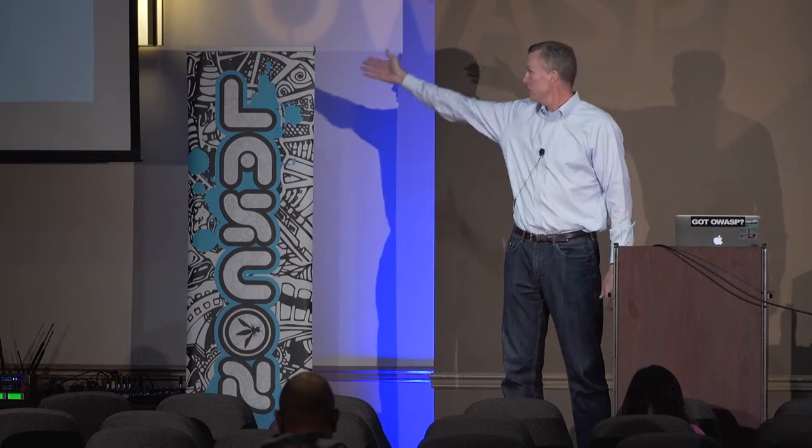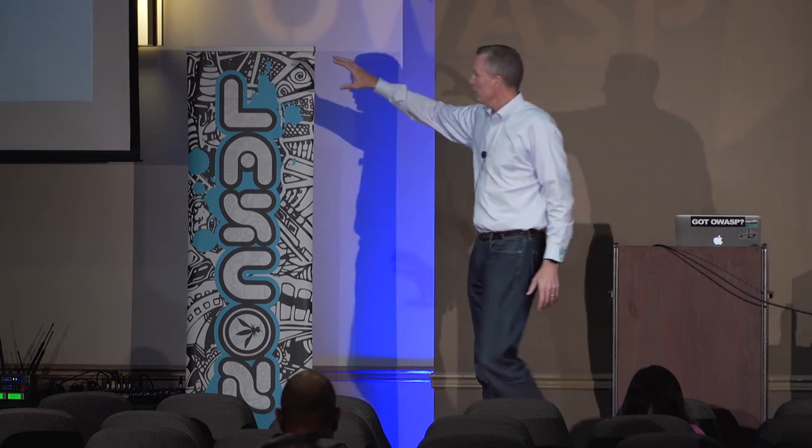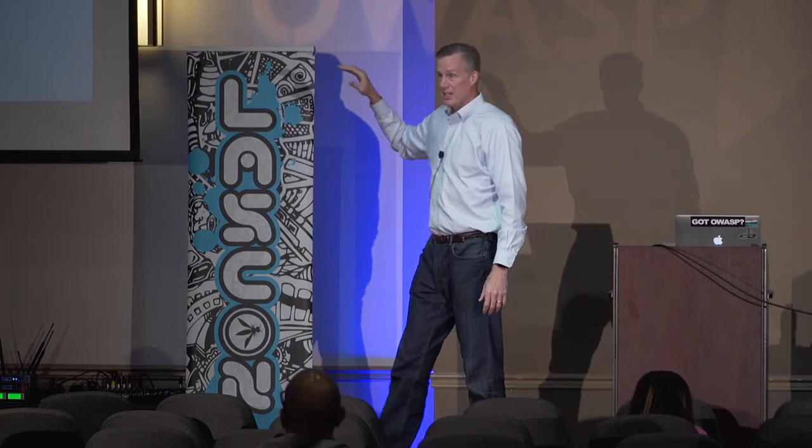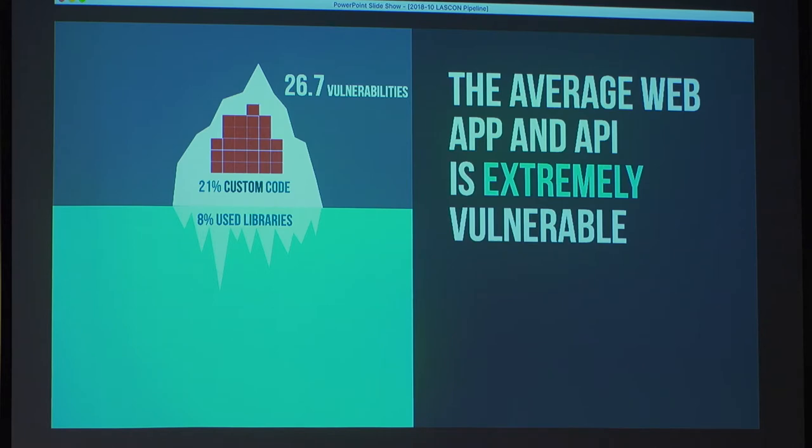A lot of people are focused on library vulnerabilities, and you can buy tools that are good at that because it's a simpler problem. But you're not pushing the ball very far down the field if that's the only problem you solve. In fact, 79% of code is below the waterline, but almost all of that library code is unused — it almost never gets called. So if a tool tells you you're using 25 out-of-date libraries, there's a good chance you're not actually invoking the vulnerable code at all. Be careful where you focus your AppSec efforts.